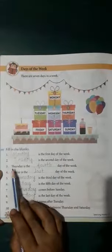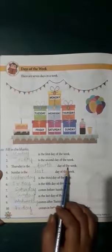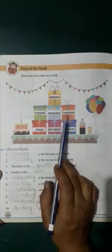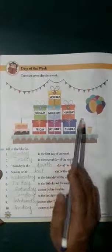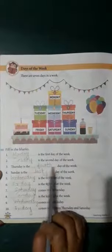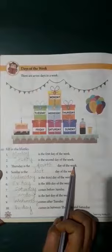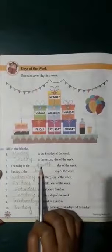Now the third question is: Thursday is the dash day of the week. Count Thursday — one, two, three, four. Fourth day. So we write here Thursday is the fourth day of the week. We write in the cardinal form.